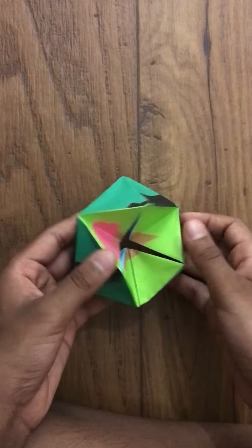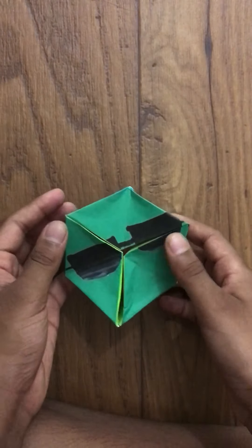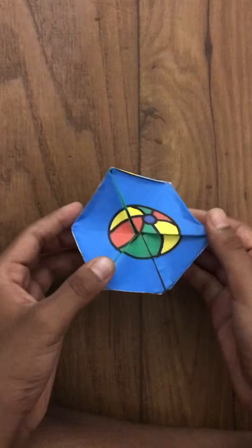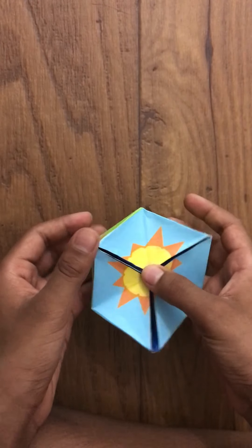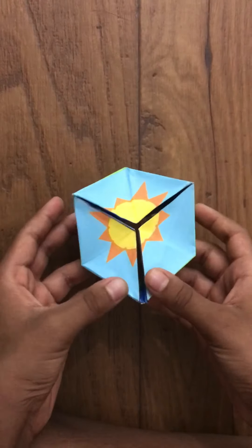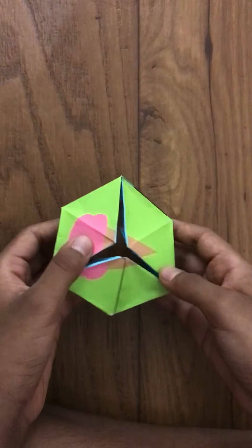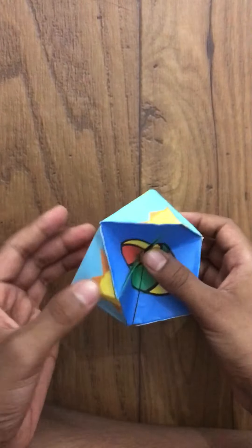First, an ice cream. Next, a sun glass. And then a beach ball. And last but not least, a sun. And this is a really cool and easy toy to make.